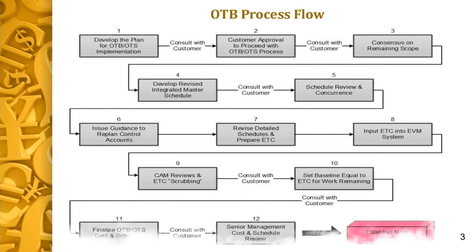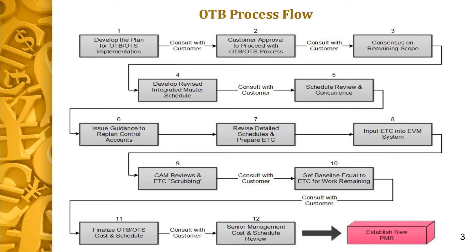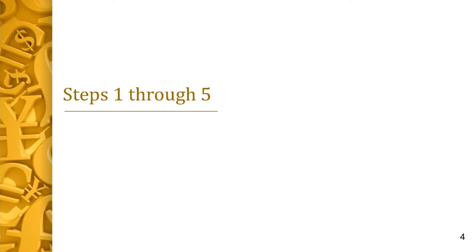This process flow is from the OTB and OTS Guide. We will follow this flow as we examine the guide's recommended 12 steps to execution of the new PMB. The flowchart steps refer to contractor actions and identify when customer interaction is essential. Note that early involvement and frequent interaction with DOE is critical. Implementing an over-target baseline is as involved as the project's initial baselining process, if not more so.